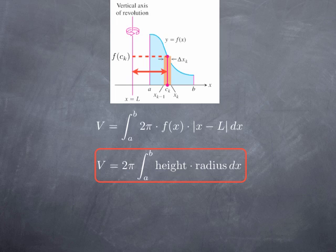The way you should think of this formula is 2π integral from a to b of the height of a typical shell times the radius of a typical shell. Let's see how that works.